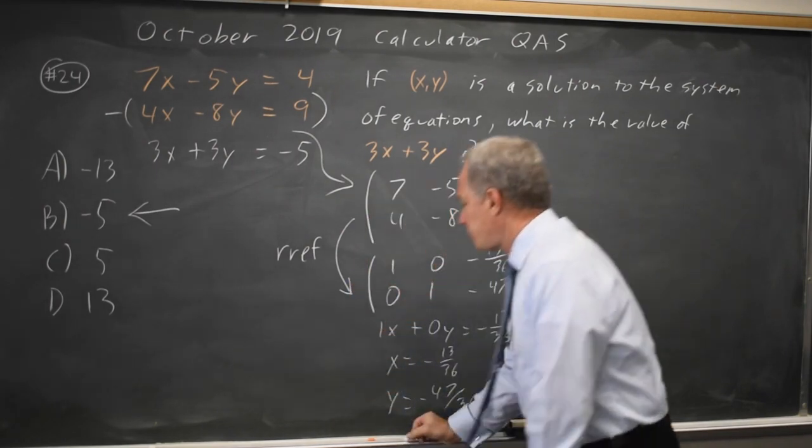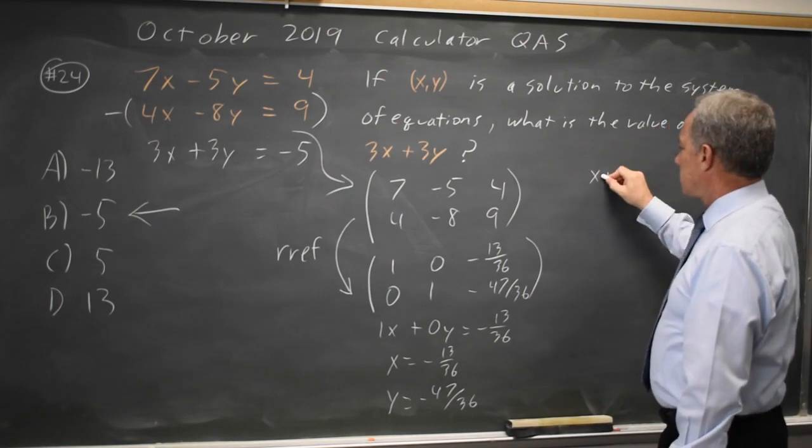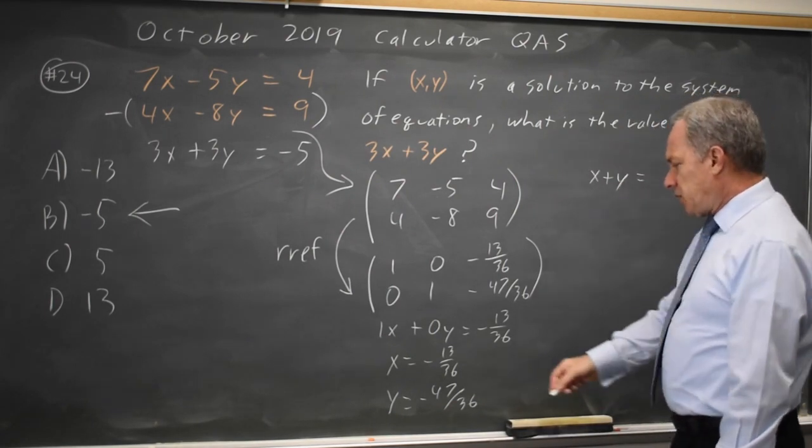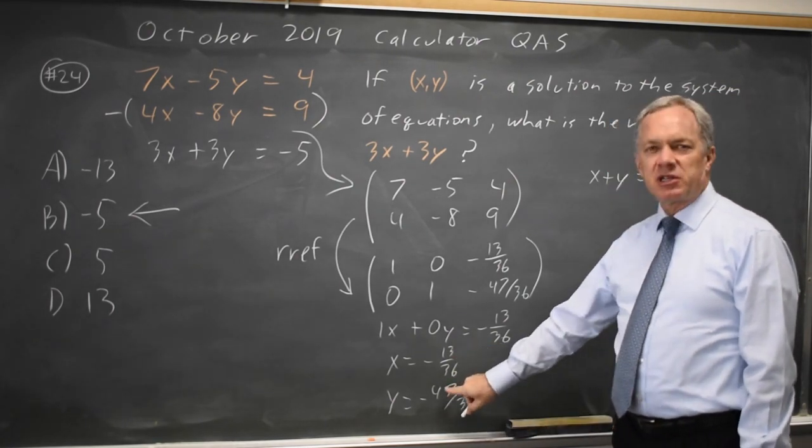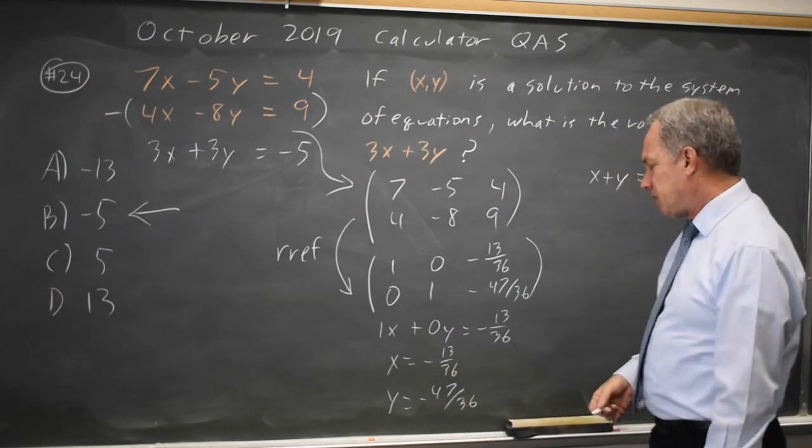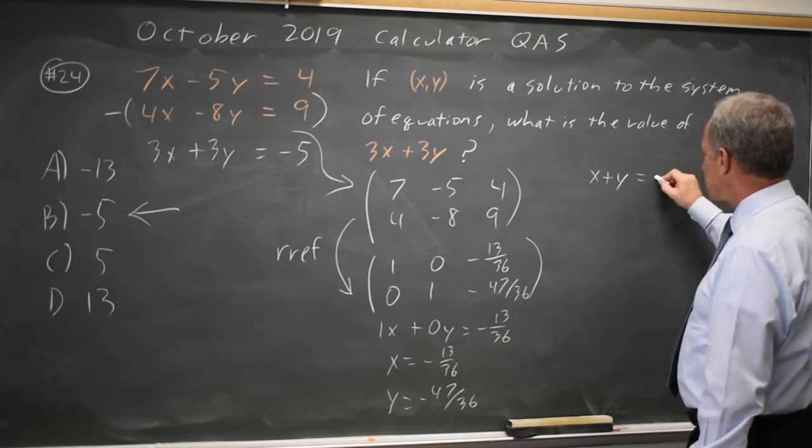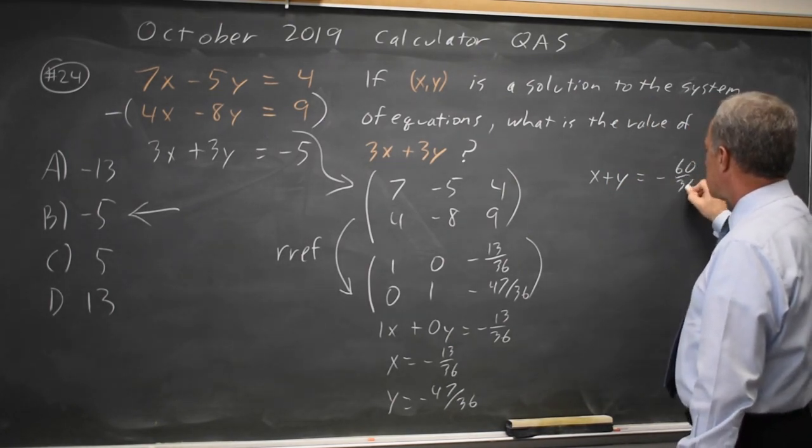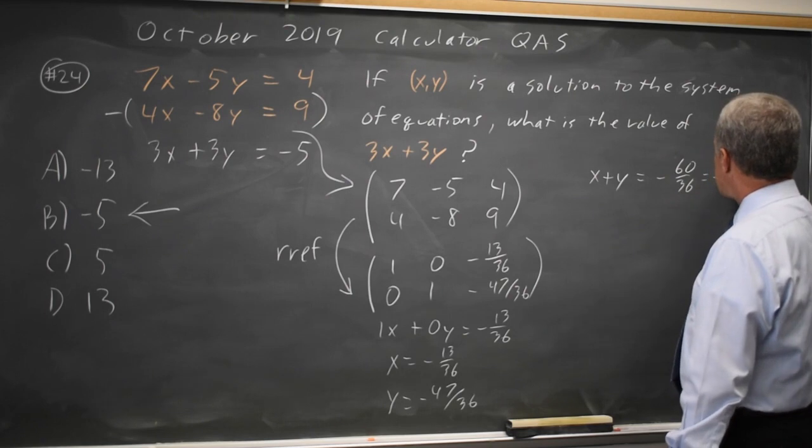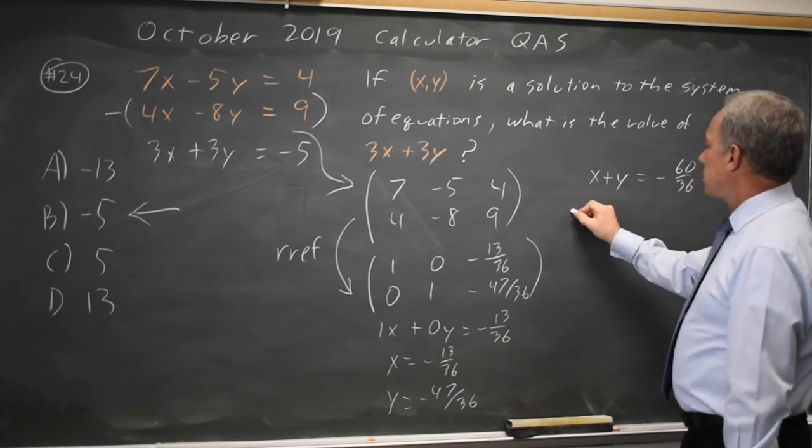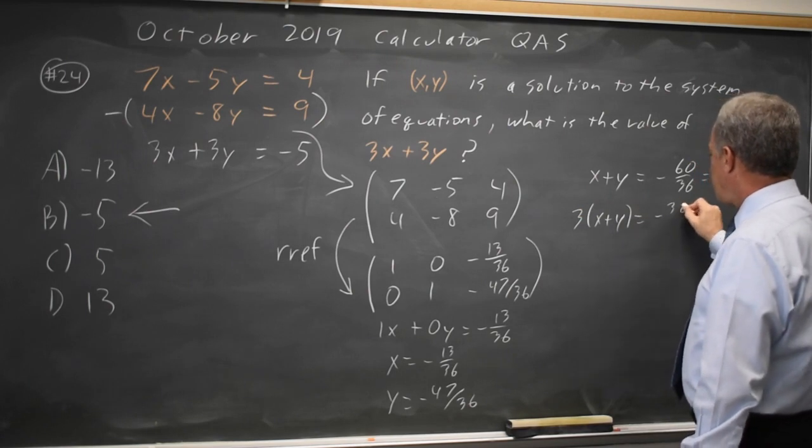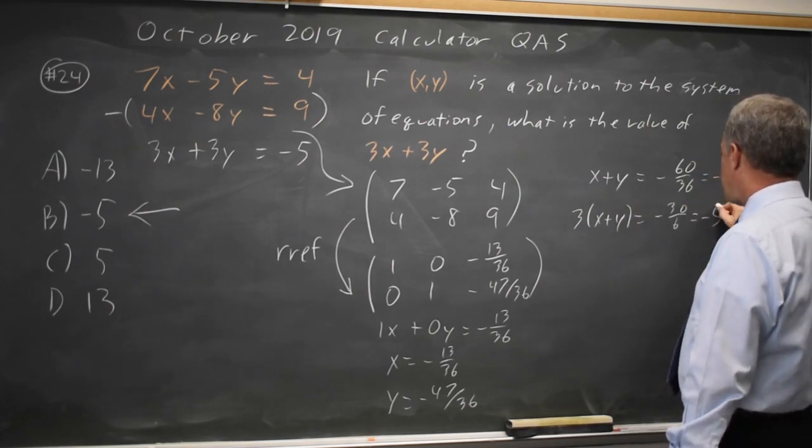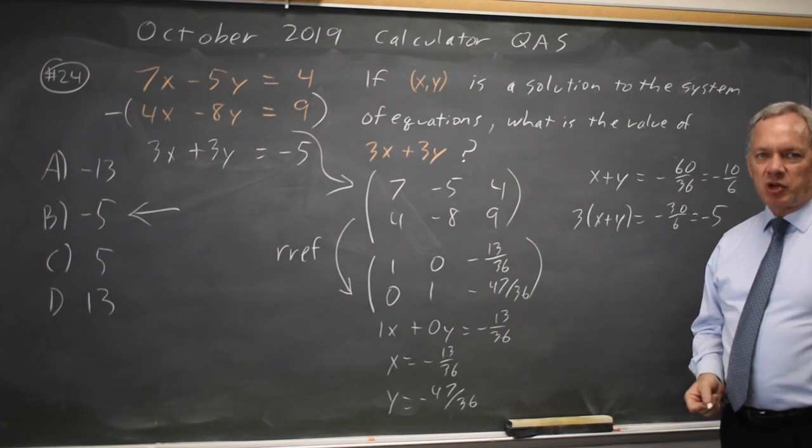Adding x plus y, I get negative 37 over 36 minus 47, I'm sorry, negative 13 over 36 minus 47 over 36 is negative 60 over 36, which is negative 10 over 6. 3x plus 3y is negative 30 over 6 equals negative 5. So we can solve that by hand also.